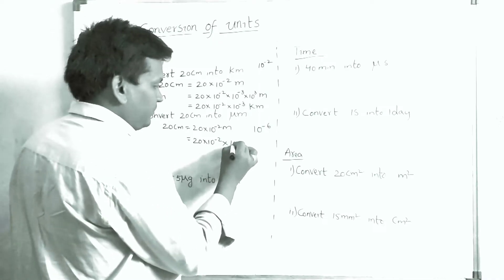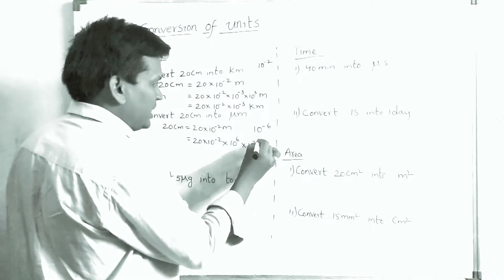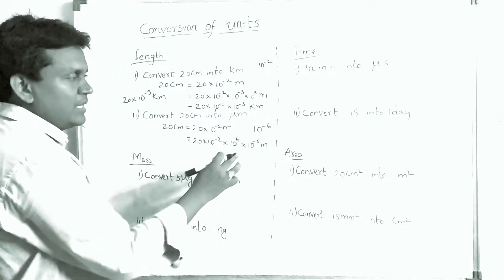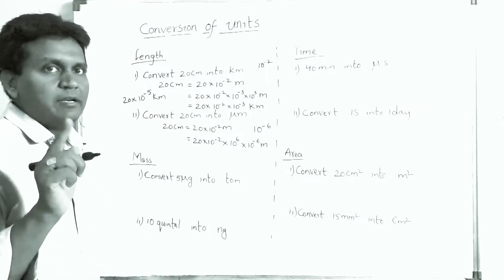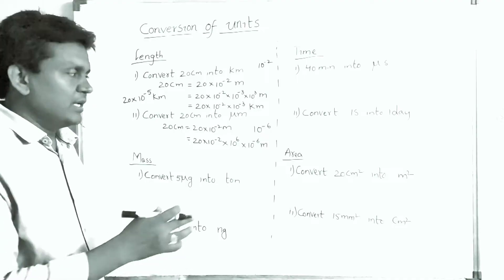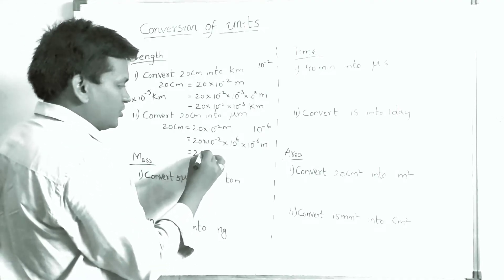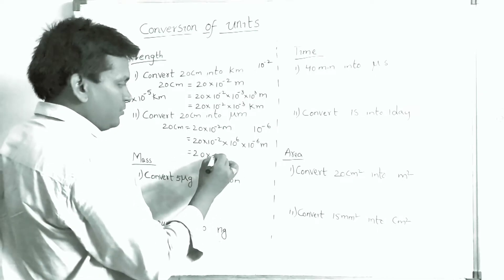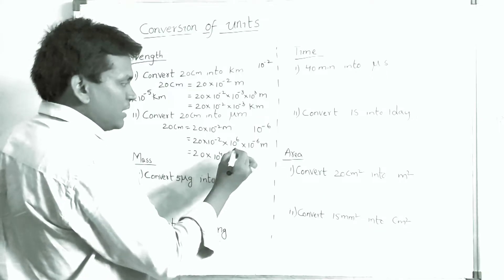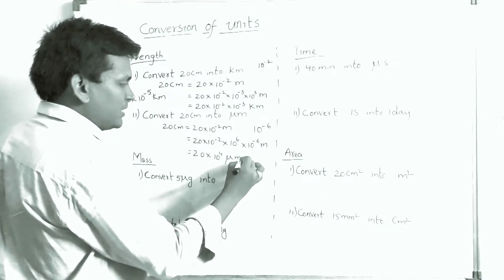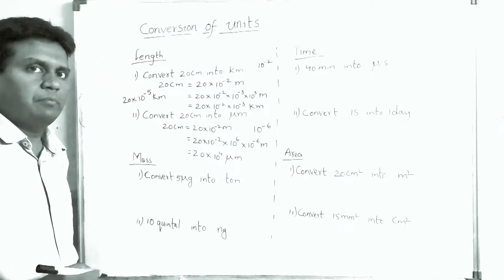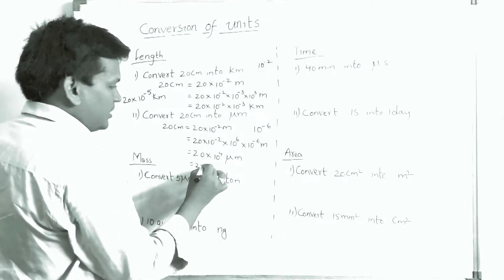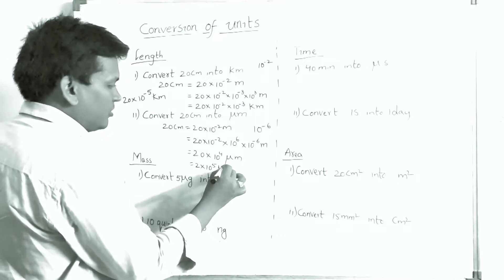So we write it as 10⁶ × 10⁻⁶ meter. Bases are equal; adding powers: 6 minus 6 equals 0, so the value doesn't change. This becomes 20 × 10⁽⁻²⁺⁶⁾ = 20 × 10⁴ micrometer. Or simplified: 2 × 10⁵ micrometers.